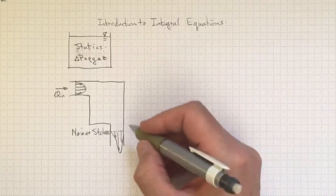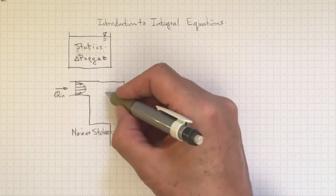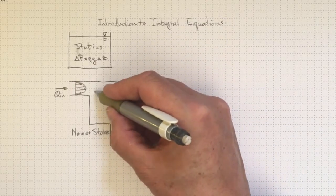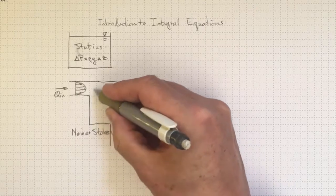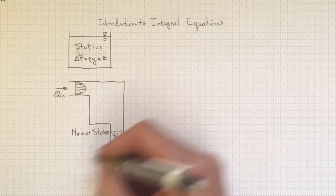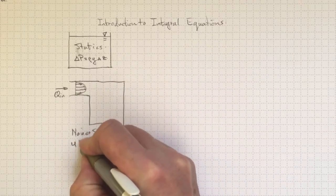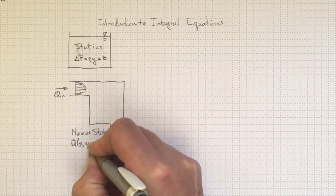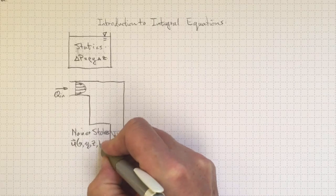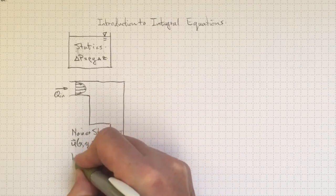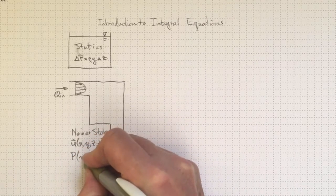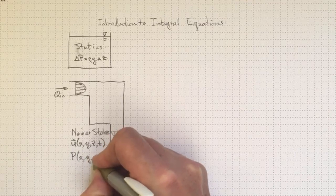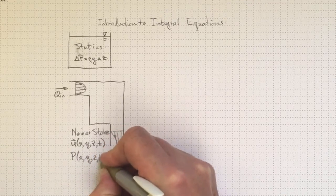If we applied the Navier-Stokes equations, we would be able to find out exactly what was going on all the way through this region of interest. So that we would know the velocity field as a function of x, y, z, and time. We would know the pressure field as a function of x, y, z, and time.